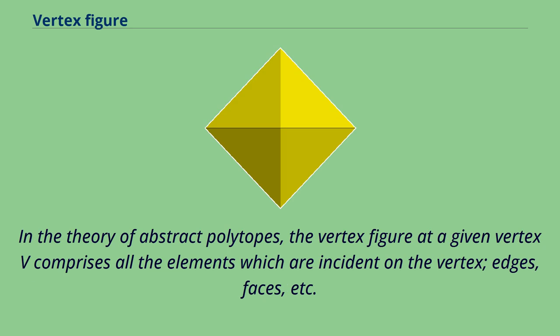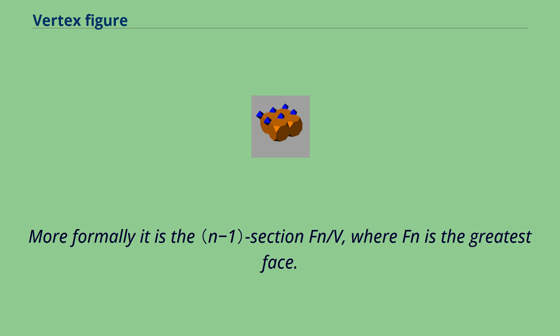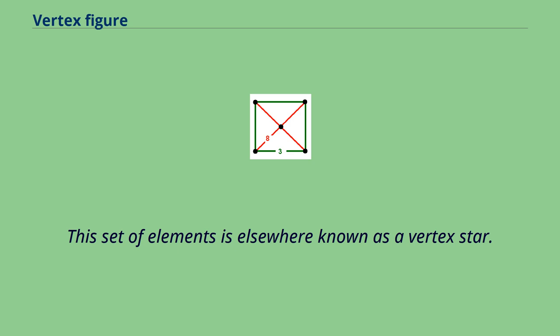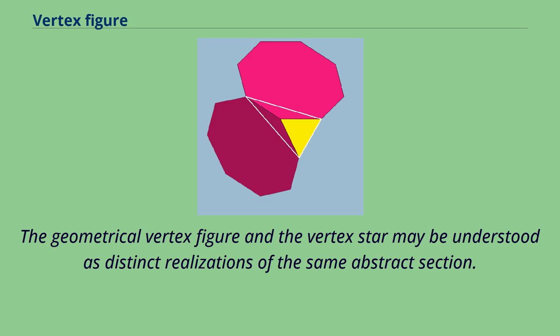In the theory of abstract polytopes, the vertex figure at a given vertex V comprises all elements which are incident on the vertex—edges, faces, etc. More formally it is the section F_n/V, where F_n is the greatest face. This set of elements is elsewhere known as a vertex star. The geometrical vertex figure and the vertex star may be understood as distinct realizations of the same abstract section.